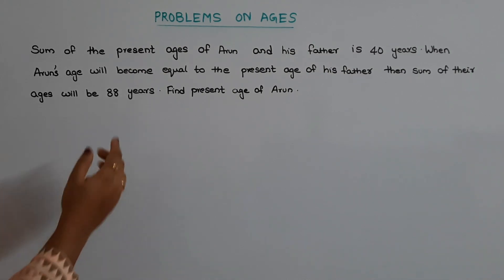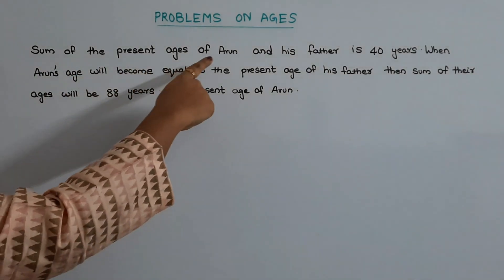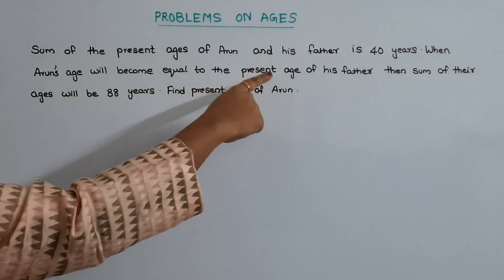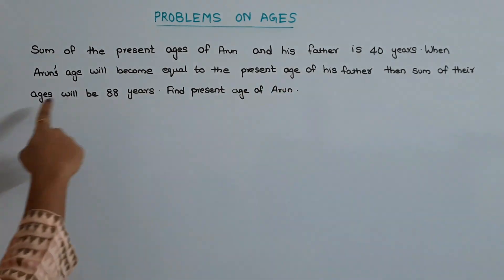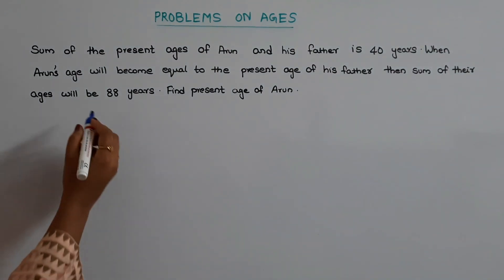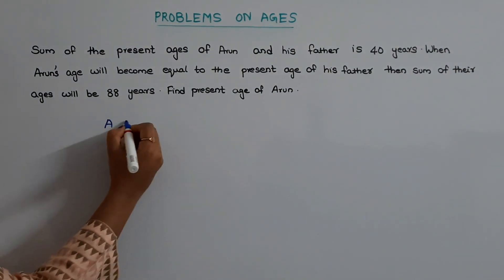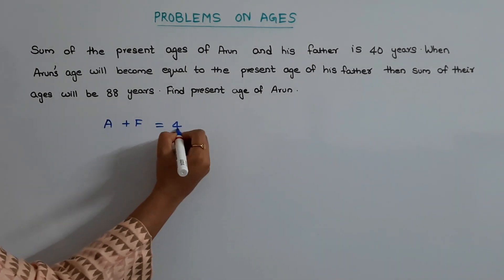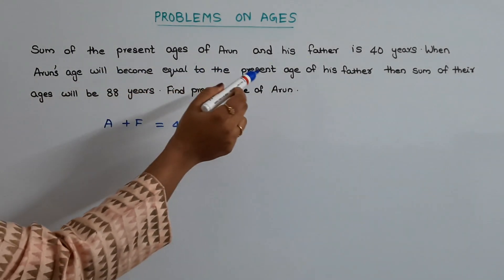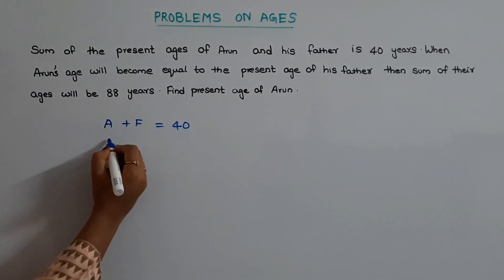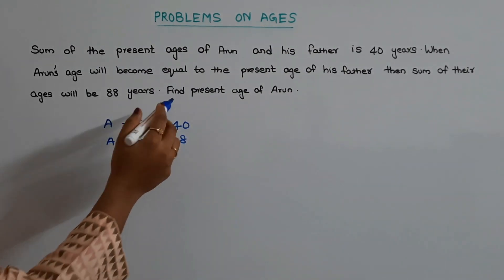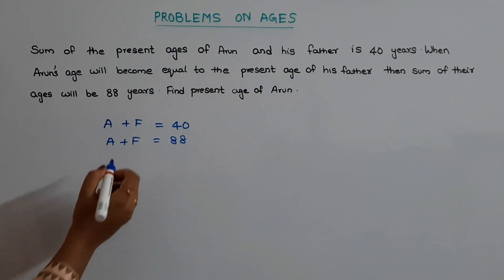This is a similar question to the previous one. The sum of the present ages of Arun and his father is 40 years. When Arun's age will become equal to the present age of his father, the sum of their ages will be 88 years. Find the present age of Arun. In this question the sum of the present ages of Arun and his father is 40 years, and the sum of their ages when Arun's age equals the father's present age is 88 years. We need to find out the present age of Arun.